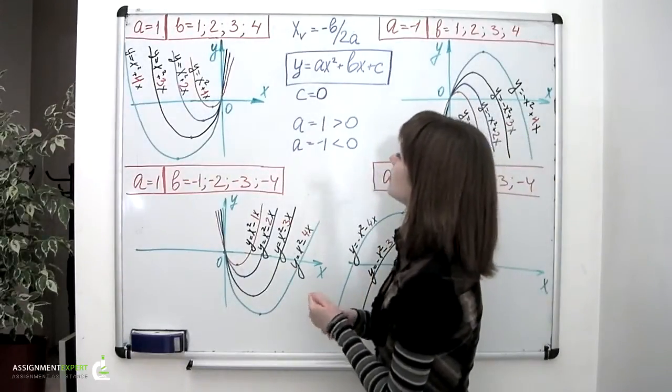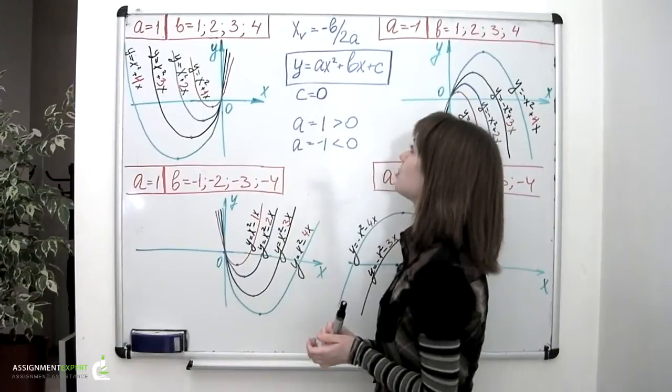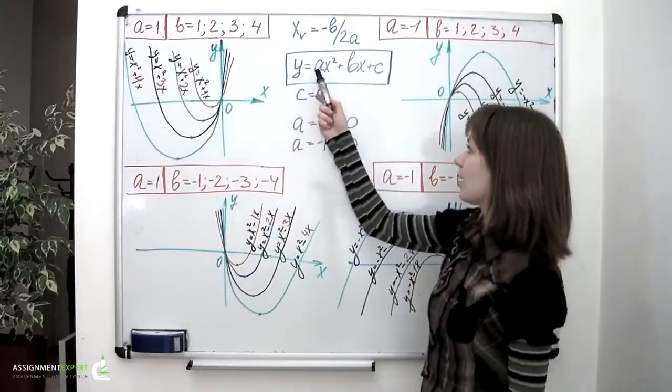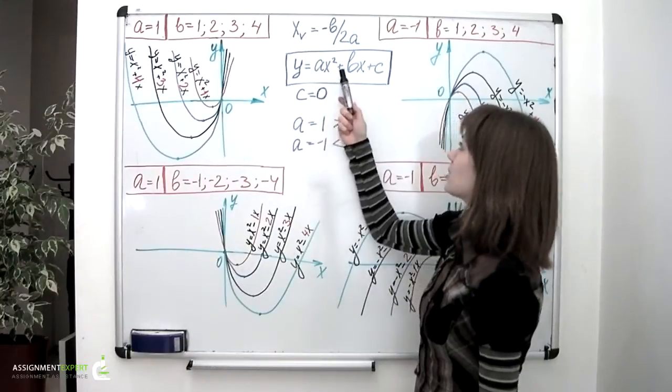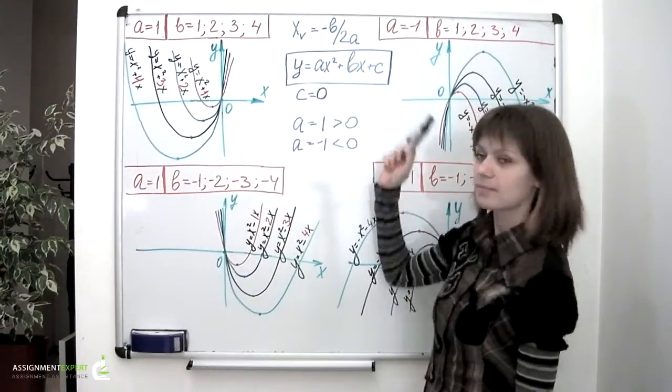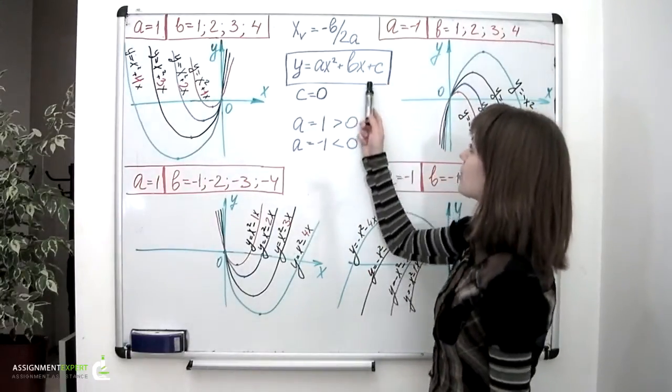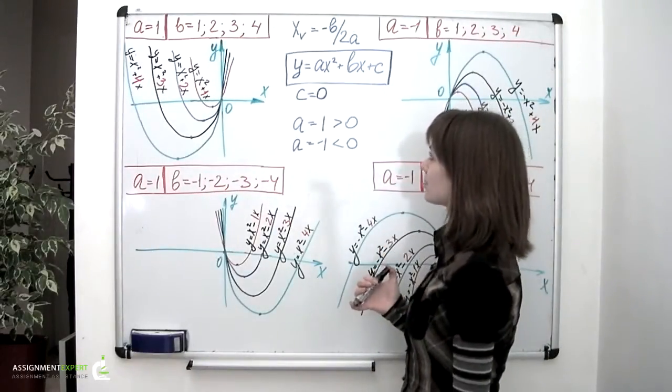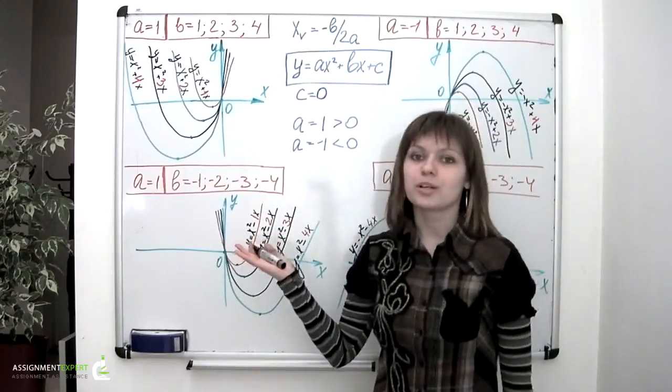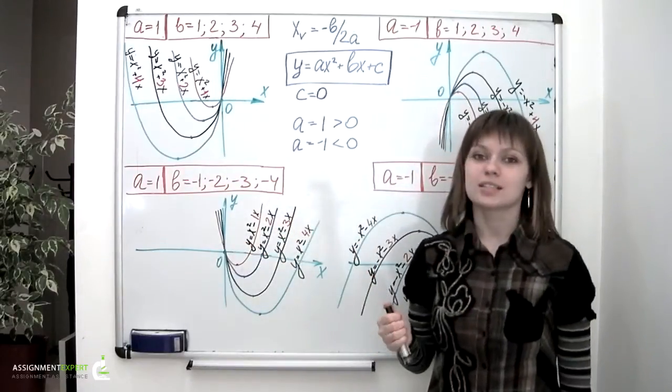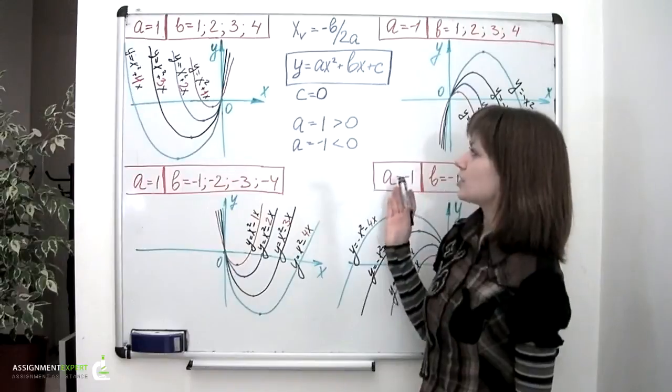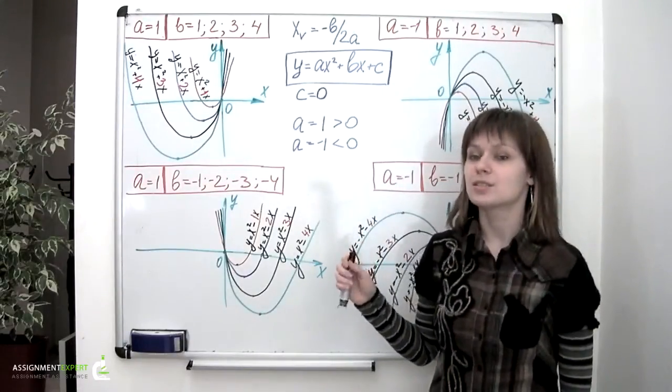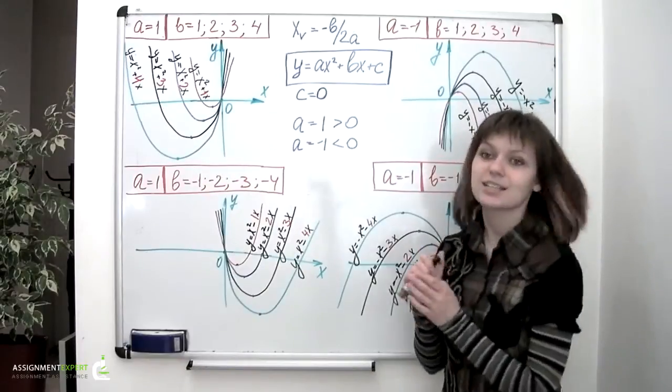So we can recall that in general a parabola can be described by a quadratic function of the following form: a times x squared plus b times x plus c. c is a free term in this equation. It is also known as the y-intercept, a point where the parabola crosses the y-axis. It only influences the movement of the parabola along the y-axis, so let's set it to zero.